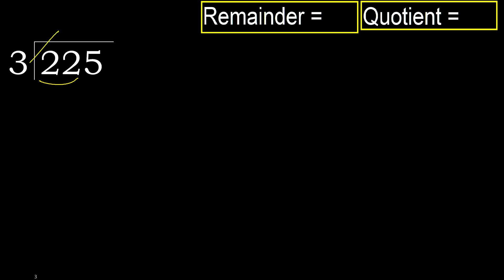3 multiplied by which number is nearest to 22, but not greater? 3 multiplied by 8 is 24, which is greater. 3 multiplied by 7 is 21, which is not greater. 22 minus 21 is 1.